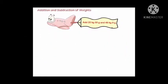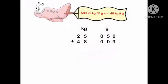Here, we have to add 25 kg 50 gram with 48 kg and 9 gram. First, we have to write the numbers in column form. Always remember, write the value of gram in gram column and the values of kg in kg column.